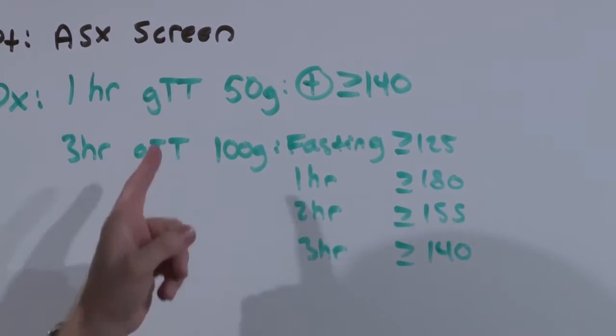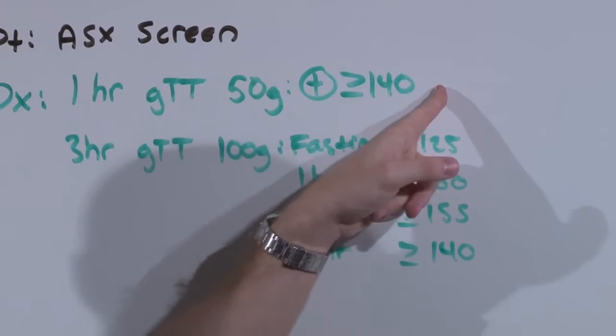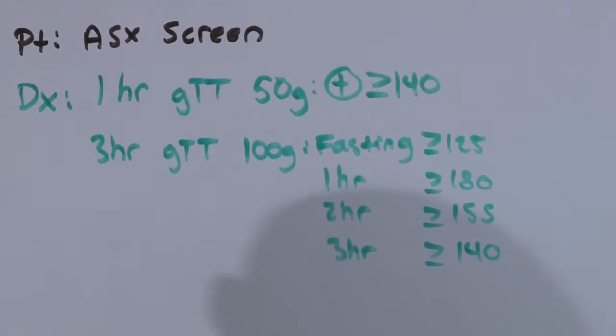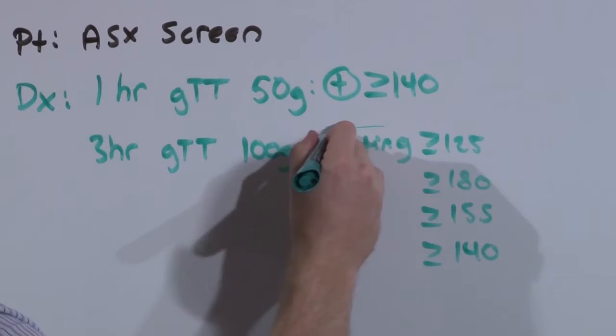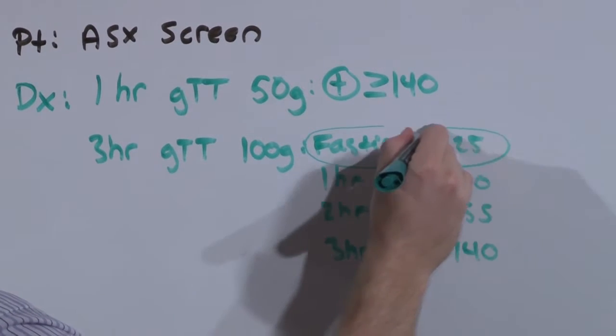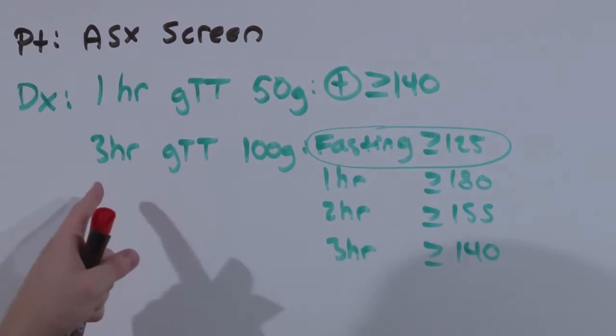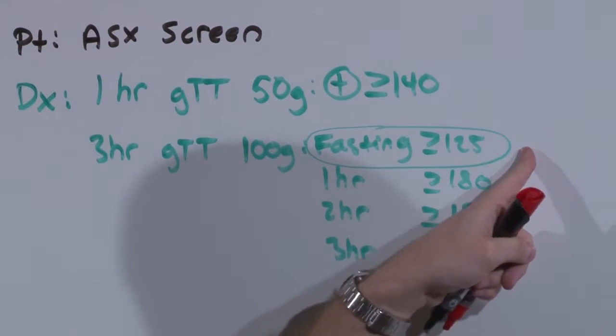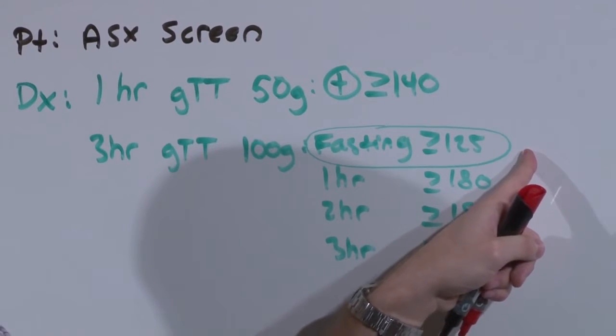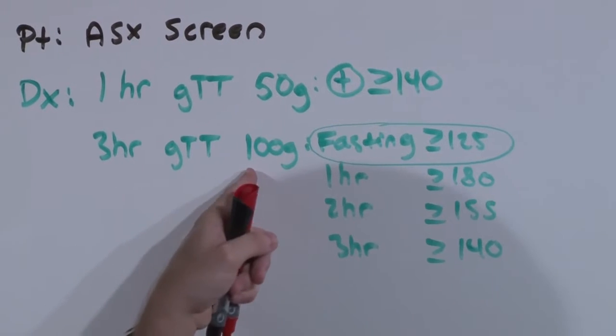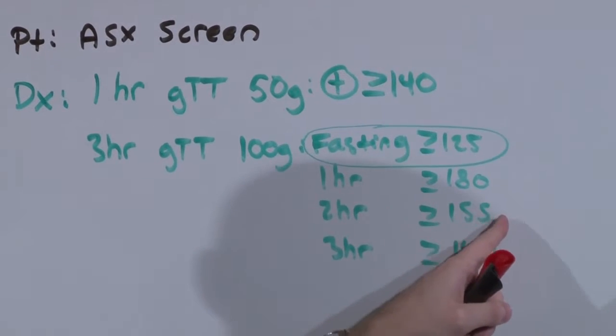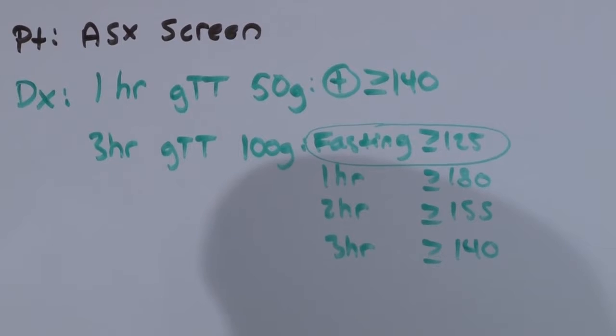Now you need any two to be positive. So your one hour glucose tolerance test is already positive. If you start the three hour glucose tolerance test and the fasting glucose is greater than 125, there's no need to do the three hour glucose tolerance test. You already have gestational diabetes. But if their fasting glucose is less than 125, give them the 100 gram load and check their glucose every hour for three hours.